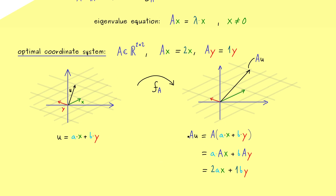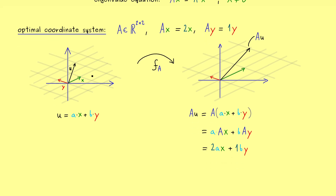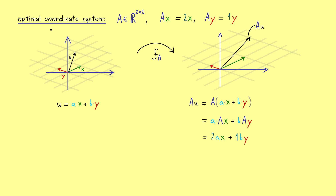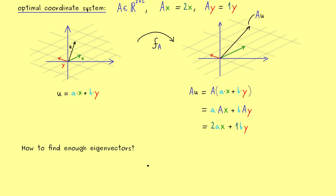So in other words, by knowing these two eigenvectors, the calculation with matrix A gets very simple. And with that, we immediately see the big advantage of eigenvectors: if we find enough eigenvectors, we can form such an optimal coordinate system. Therefore, the important question we have to answer in this video is how do we find enough eigenvectors? And indeed, we will see that the so-called characteristic polynomial is an important ingredient to answer this question.